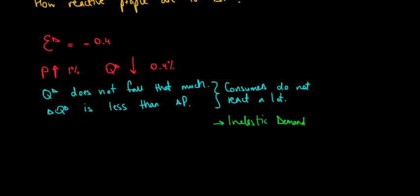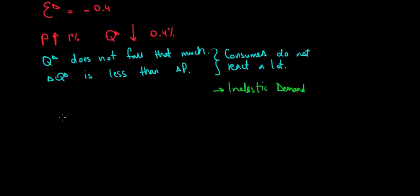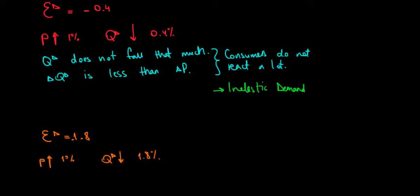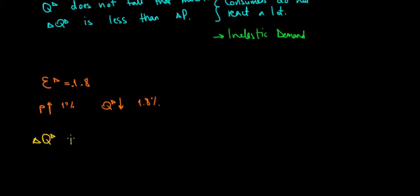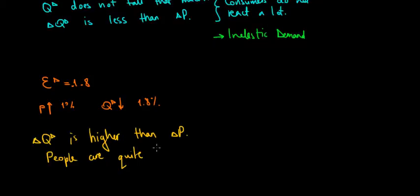Now let's contrast this with another example. If elasticity of demand equals minus 1.8, that means if price increases by 1%, quantity demanded would decrease by 1.8%. The reaction in quantity demanded is quite high — it's more than the change in price. People are quite reactive; they decrease their demand a lot. That means we have an elastic demand — consumers react a lot.